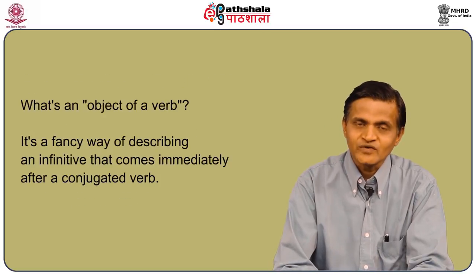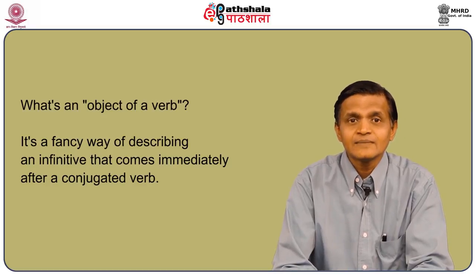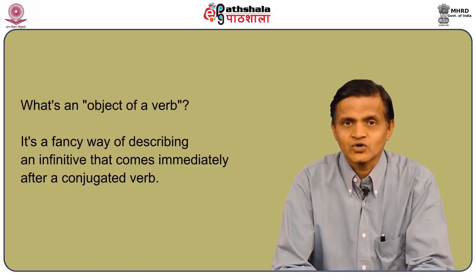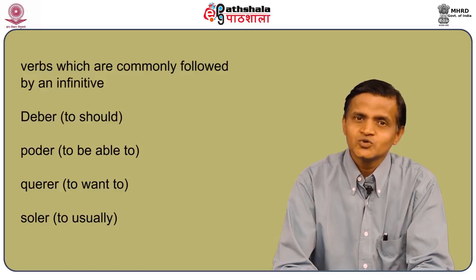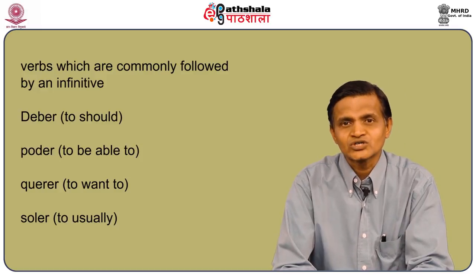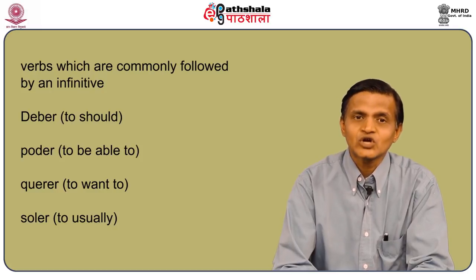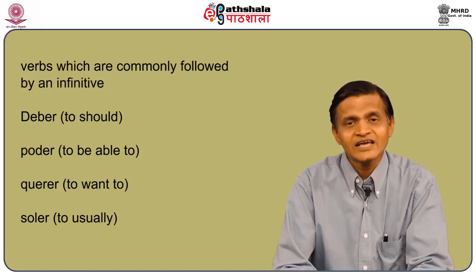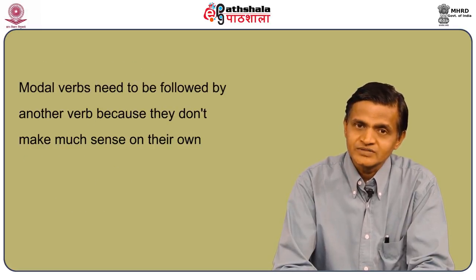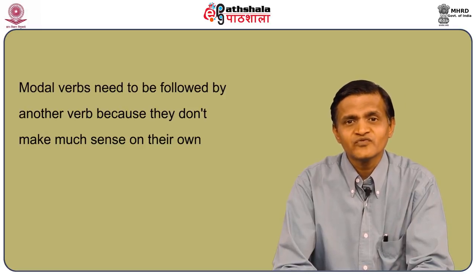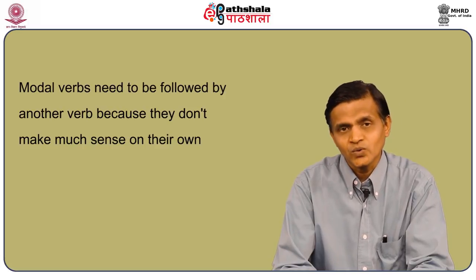What is an object of a verb? It is a fancy way of describing an infinitive that comes immediately after a conjugated verb. Deber (to should/ought), poder (to be able to), querer (to want to), and soler (to usually) are verbs commonly followed by an infinitive. They are sometimes referred to as modal verbs, and they need to be followed by another verb because they don't make much sense on their own.